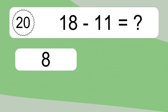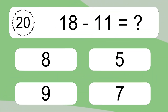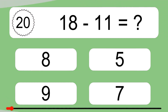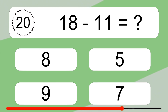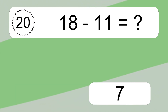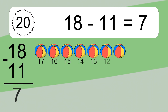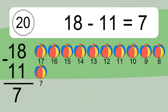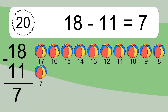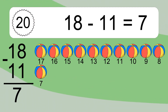18 minus 11 equals what? 18 minus 11 equals 7. Let's count it: 17, 16, 15, 14, 13, 12, 11, 10, 9, 8, 7.